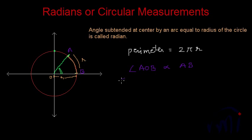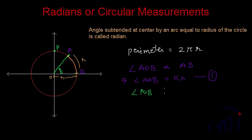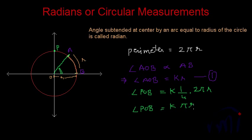From here we can say that angle AOB will be equal to k times R. Why R? Because the length of arc AB is equal to the radius of the circle. Let me call this equation number 1. Now if I take this point and call it P, angle POB is actually a right angle, and this will be equal to k times one-fourth of the perimeter, because this quadrant represents one-fourth of the circle. So the length of arc PB will be one-fourth of the perimeter, giving k times (1/4) × 2πR. Let me call this equation number 2.